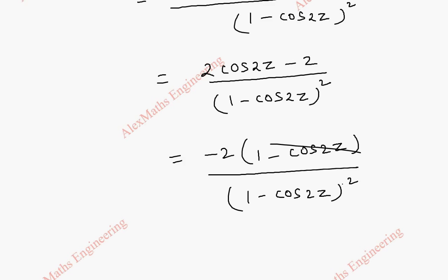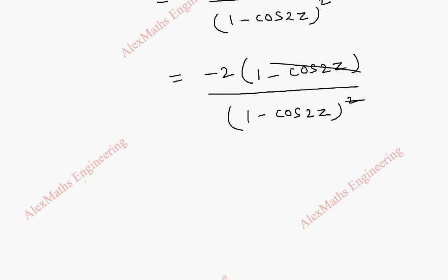After cancelling this and this we left with u_x of z comma 0 as minus 2 by 1 minus cos 2z.